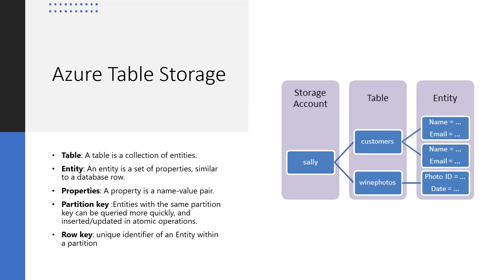Azure Table Storage is a service that stores non-relational structured data, providing a key-value store with a schema-less design. It has the following components: a Table, which is a collection of entities. Since it is schema-less, a single table can have entities that have different sets of properties. An entity is a set of properties, and a property is a key-value pair. An entity also has three system properties: a timestamp, a partition key — entities with the same partition key can be queried more quickly — and a row key, which is a unique identifier of an entity.